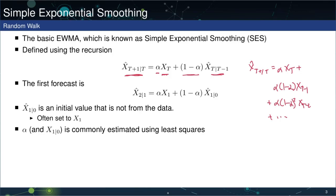Taking this recursion back to the first value, the very first forecast x2 given x1 depends on x1 and, importantly, it depends on x1 given 0. So this first forecast we don't actually have — this is known as an initial value, and it's not usually something we can get from the data. In many contexts, it makes sense to set this simply to x1, and in particular, when the sample size is relatively large and alpha is not 1, the value has little impact on the forecast. An alternative is to estimate it along with alpha.